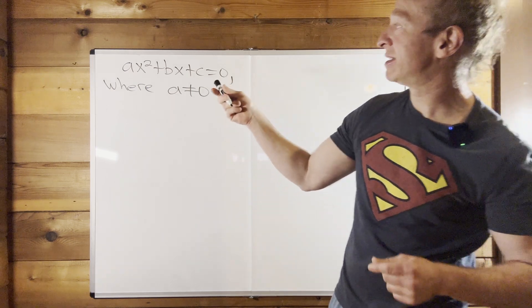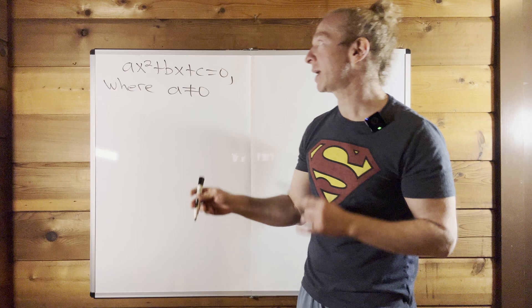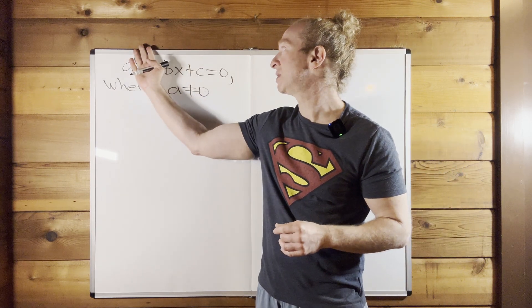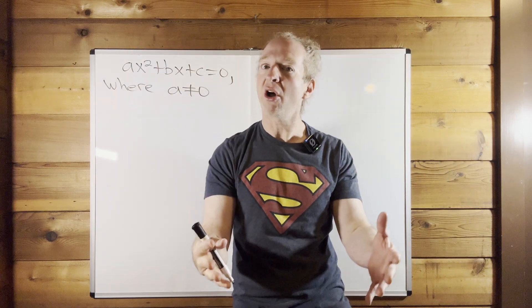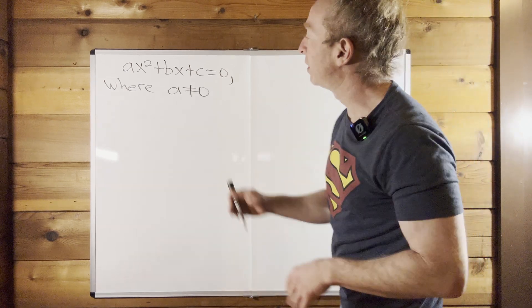Notice the condition that a is not equal to zero. So if a were equal to zero, what happens is you just get bx plus c equals zero. And that is called a linear equation, right? So super, super key.